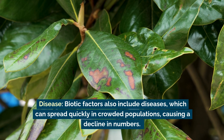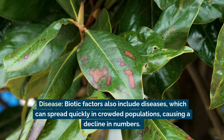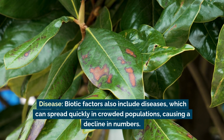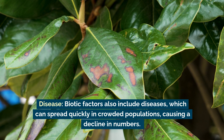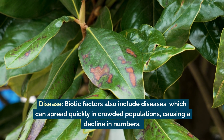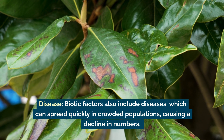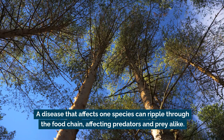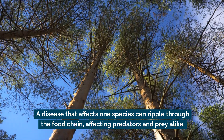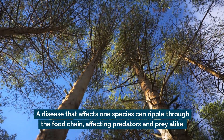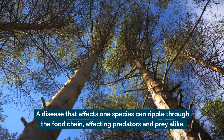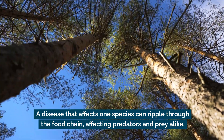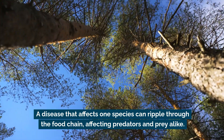Disease: biotic factors also include diseases, which can spread quickly in crowded populations, causing a decline in numbers. A disease that affects one species can ripple through the food chain, affecting predators and prey alike.